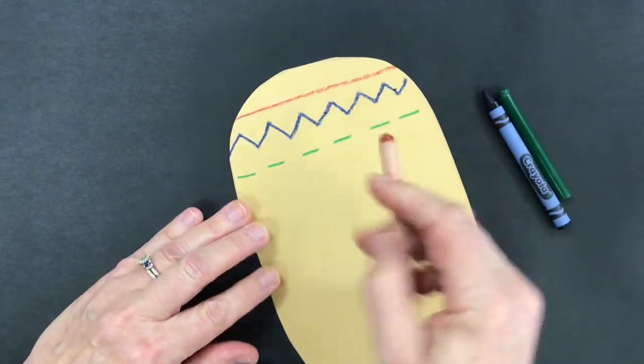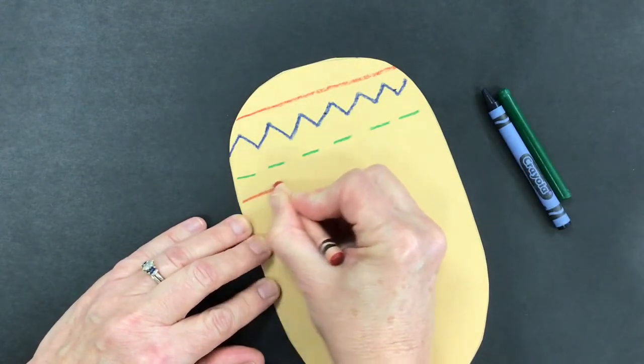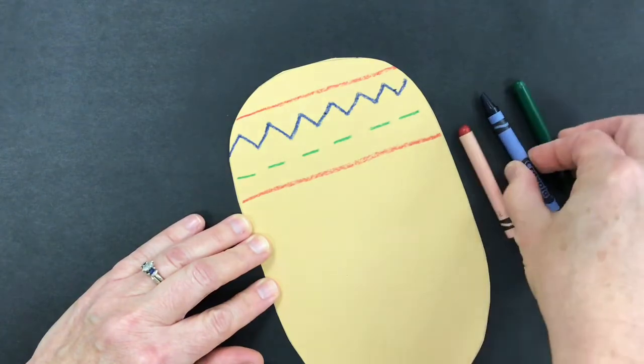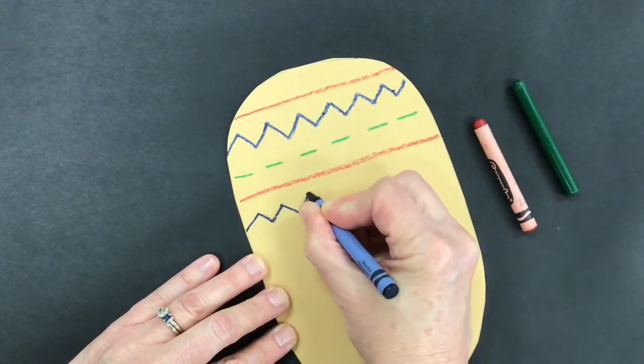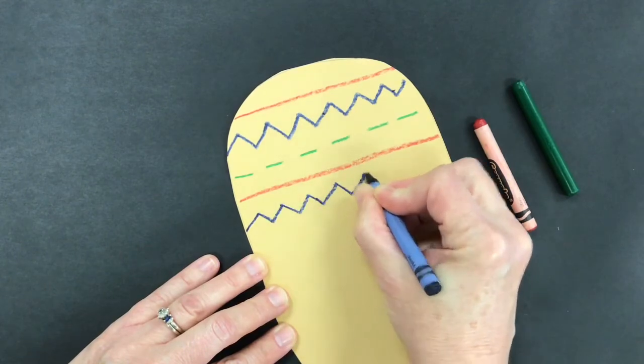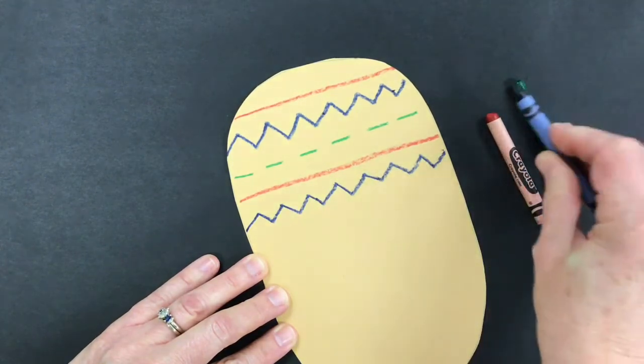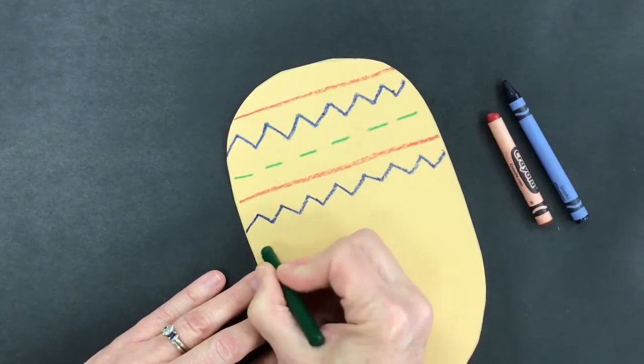Now I'm gonna pick up the red again and I'm gonna do a red straight line. Blue zigzag line. Green dashed line.